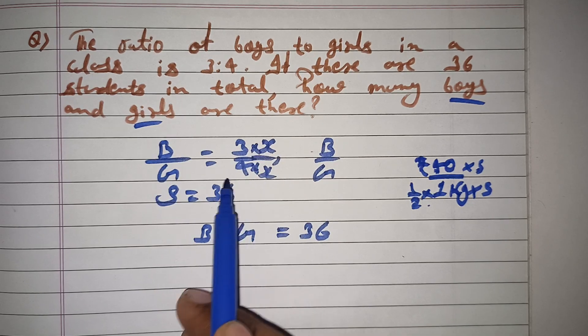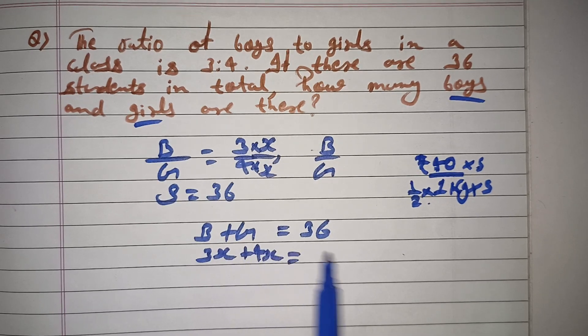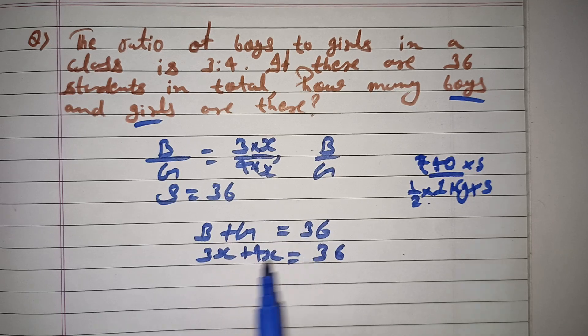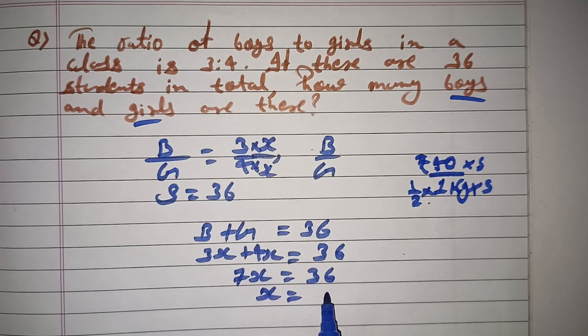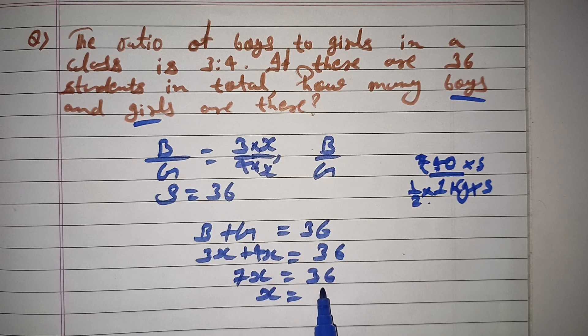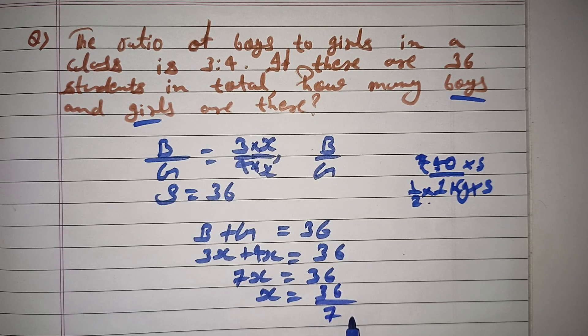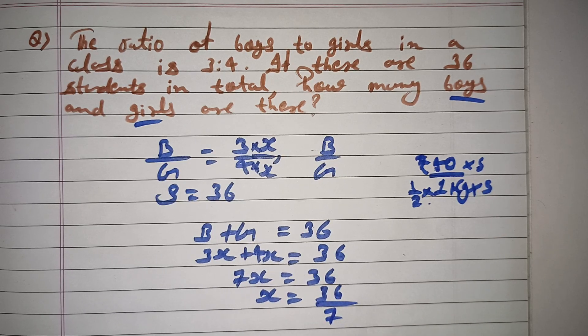So there is 3x for boys and 4x for girls. The sum of 3 and 4 is 7. So 3x plus 4x equals 7x. Therefore, 7x equals 36. X value is 36 by 7.